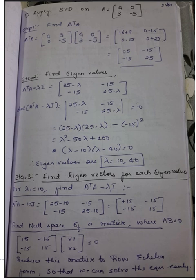SVD, as discussed in the last video, stands for singular value decomposition, where the goal is to decompose a matrix A into three different forms: U, sigma, and V transpose. U will be an m×m orthogonal matrix, VT is also an orthogonal matrix, and sigma is a diagonal m×n matrix.